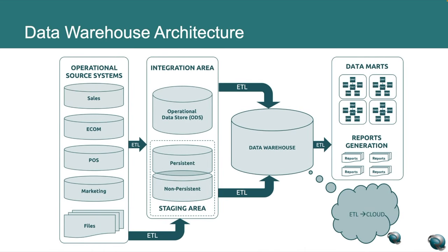This is the data warehouse architecture. It is made up of tiers. Looking at it, you have the operational source system, then an integration area which includes an operational data store — both persistent and non-persistent — and a staging area. Data flows into the data warehouse from there, and by leveraging BI tools like Tableau and Power BI, we consume and present the data in a dashboard.